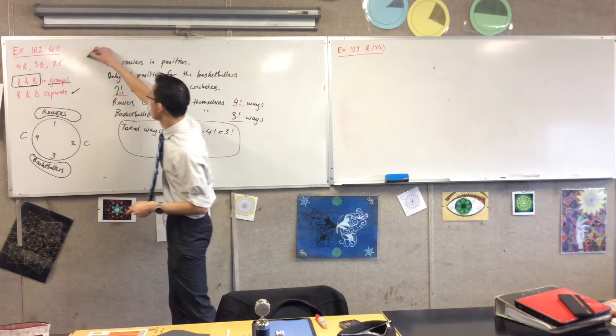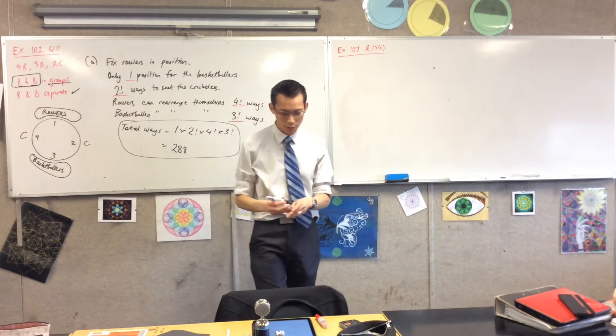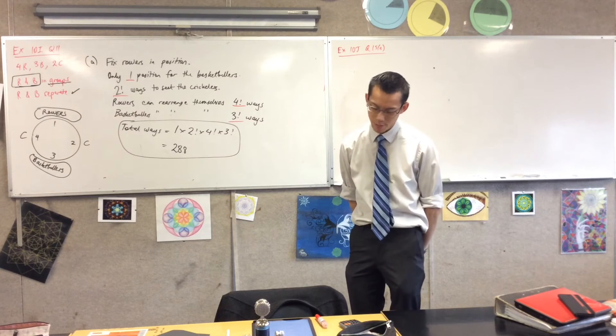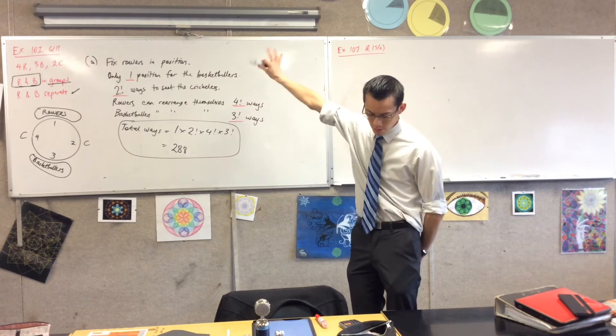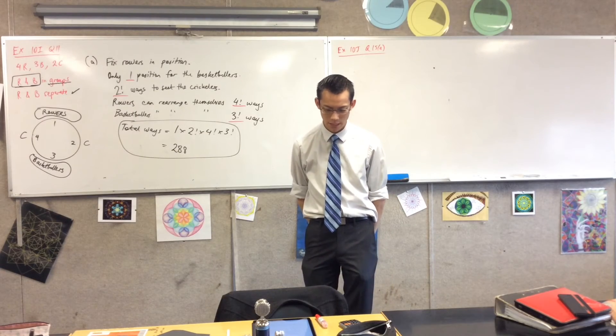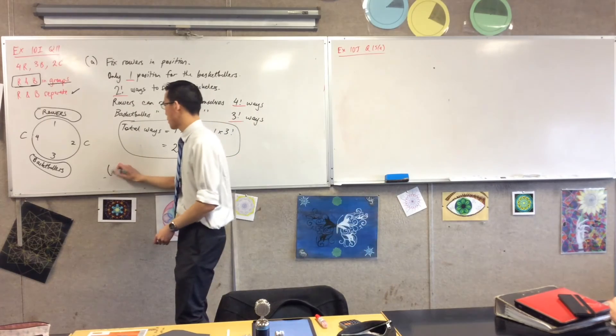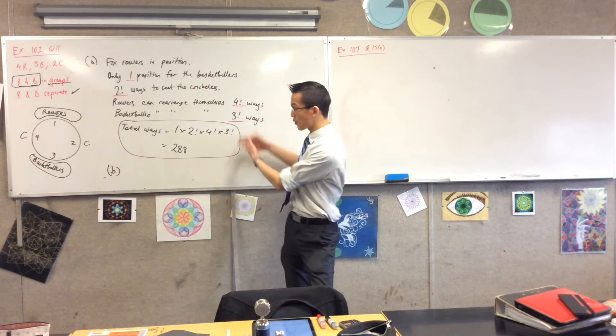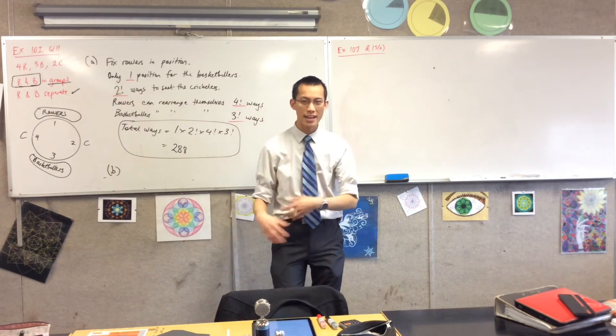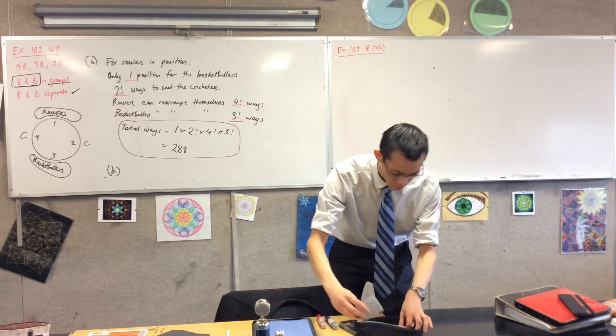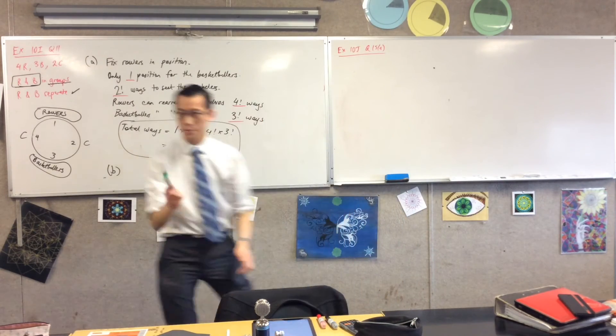So that's part A. That's the easy bit. Now comes the probability part. So have a look at what it's asking now. One rower and one cricketer are related. Given these conditions, what's the probability that these two members of the committee will sit next to each other? So here's part B.